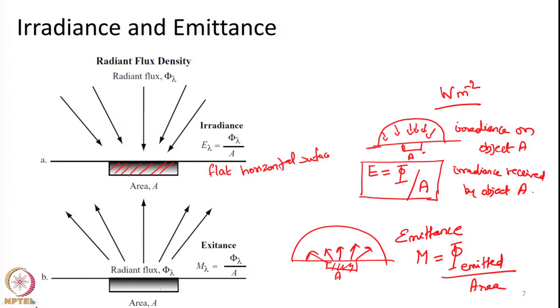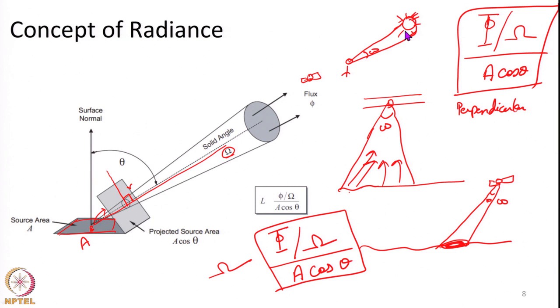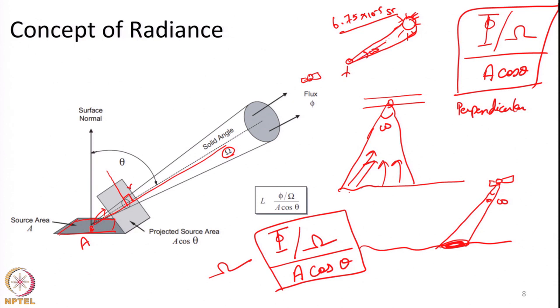To give one more example: the energy coming from the sun arrives within the solid angle we calculated as roughly 6.75×10⁻⁵ steradians. Whatever energy comes from the sun arrives within that particular solid angle only. Simply put, radiance is the energy or radiation coming in or going out within one particular direction — it varies based on direction.